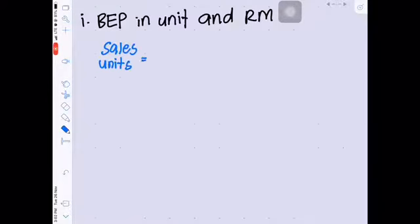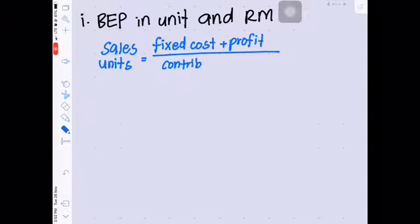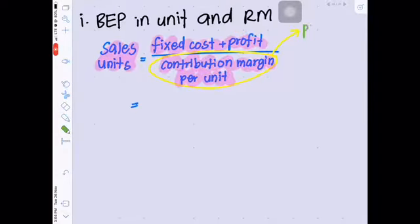Sales Units equal to Fixed Cost plus Profit divided by Contribution Margin per Unit. You can get Contribution Margin per Unit by deducting variable cost per unit from selling price per unit.